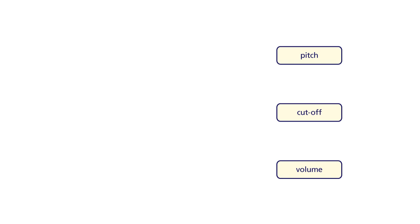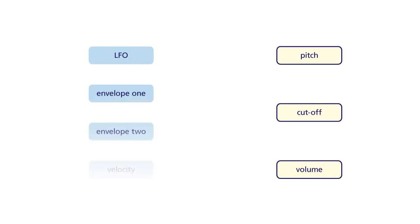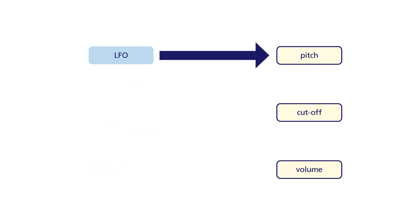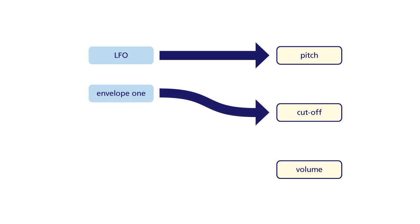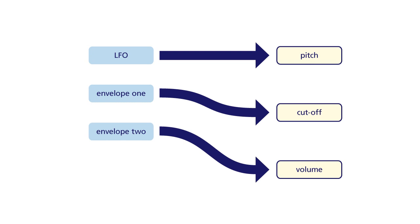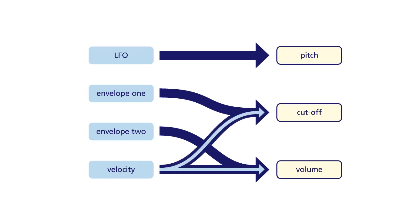So how do these modulation sources and modulation destinations all get joined together in practice? If we start with our three modulation destinations — pitch, cutoff frequency, and volume — and add some modulation sources: an LFO, two envelopes, and velocity, then we can start to hook them up. The first connection might be to attach the LFO to the oscillator's pitch. The second connection might be to assign an envelope as the modulation source for the filter's cutoff frequency. Once we've made that connection, we could attach the second envelope to the volume. Finally, to add some real-time control, we could attach velocity to act as a modulation source controlling both volume and cutoff frequency. By assigning two modulation sources to one modulation destination, we can add detailed levels of control to our sound.